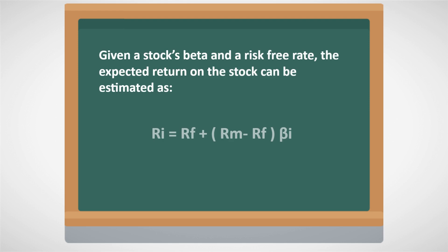The return on a stock is a function of the risk-free return RF and that proportion of the market risk premium — which is the difference between the market return RM and the risk-free return RF — as determined by the beta of the stock.